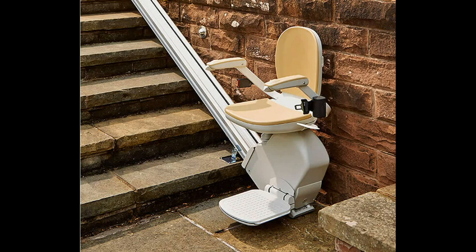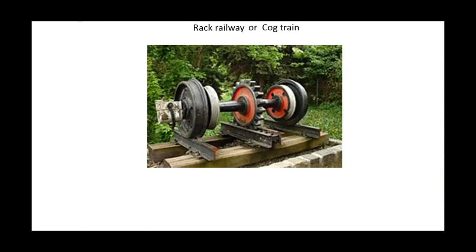This is shown on a large scale in rack railways, also called cog trains. Here is the basic unit. The middle rack is fixed. The motor that turns the pinion forces the pinion, and thus the rail cars, to move along the track. The wheels roll on the outside rails.